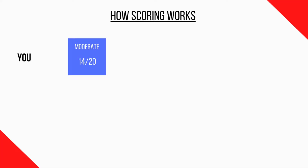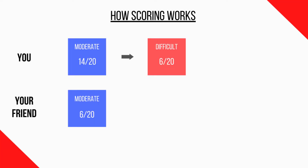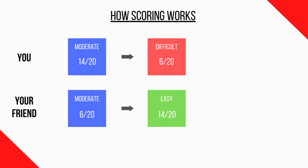Let's look at an example. In the first moderate quant section, you get 14 out of 20 questions right. The GRE recognizes you're good at quant and gives you a difficult second quant section, where you get 6 out of 20 right. Meanwhile, your friend takes the same moderate first section but only gets 6 out of 20. The GRE gives them an easier second quant section, where they get 14 out of 20 right.